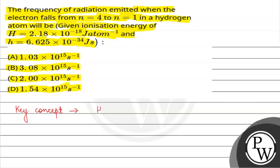The key concept is: for a hydrogen-like atom, energy will be equal to E₀ upon N square. Here, E₀ will be equal to the ionization energy. So we have the value of ionization energy of hydrogen, which gives us energy equal to minus 2.18 into 10 to the power minus 18 upon N square.